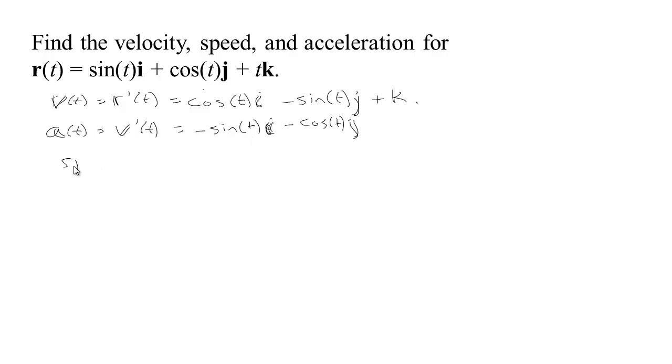Now the speed is going to be equal to the length of the velocity vector, which is going to be the square root of cosine squared plus sine squared plus 1 squared. Cosine squared plus sine squared is 1 plus 1 makes 2, so the speed is the square root of 2.